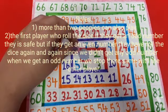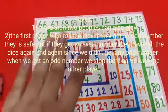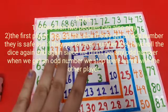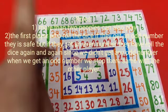Six is an even number, so since I didn't get any odd number, I have to roll the dice again and again until I get an odd number. When I get an odd number I stop there, and then it's my friend's turn.